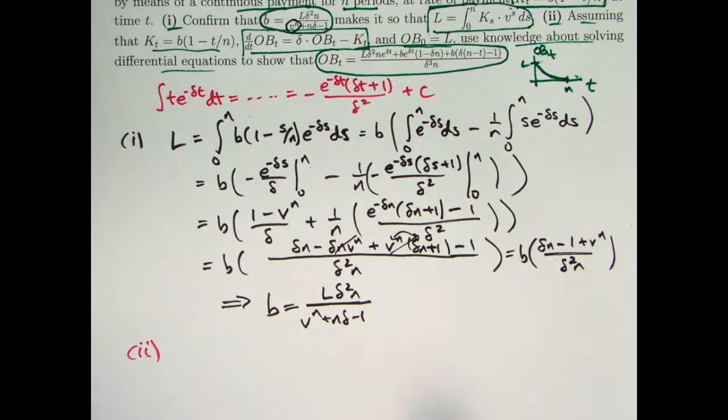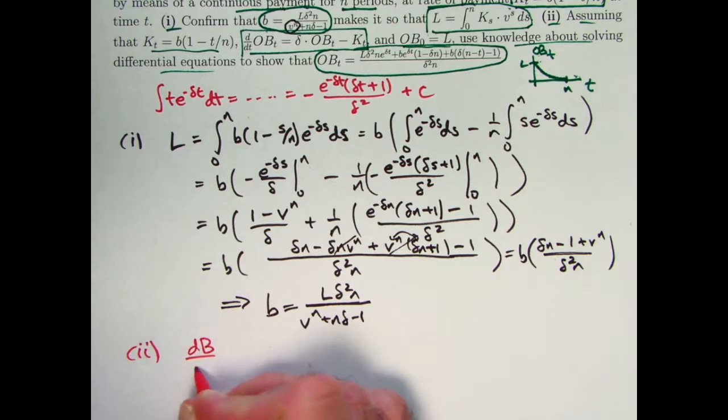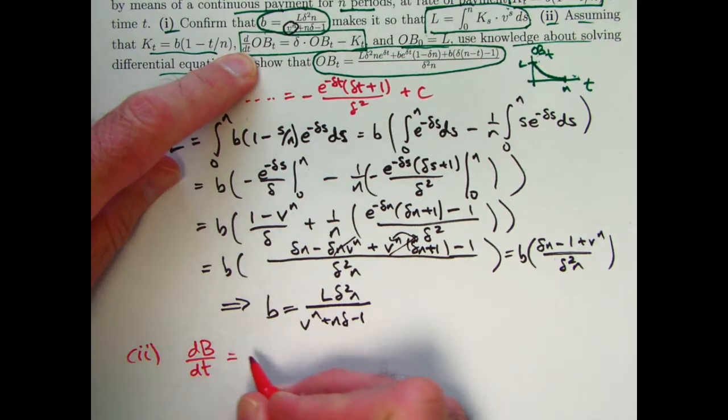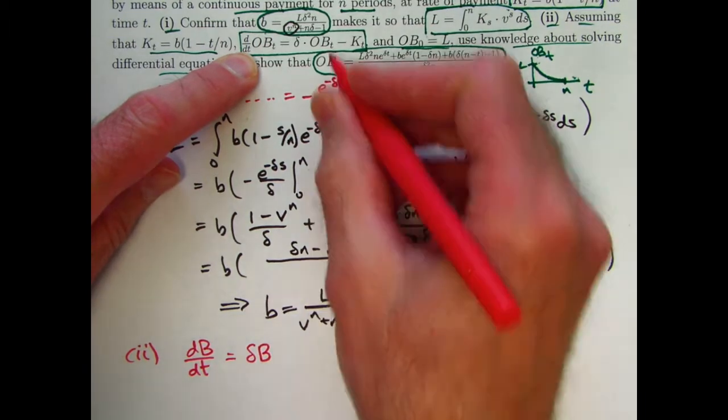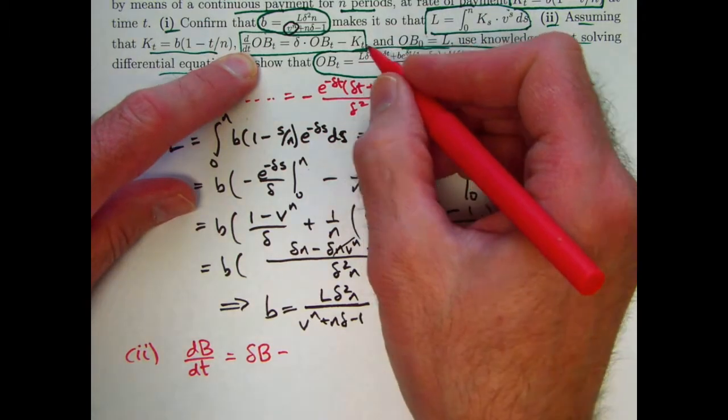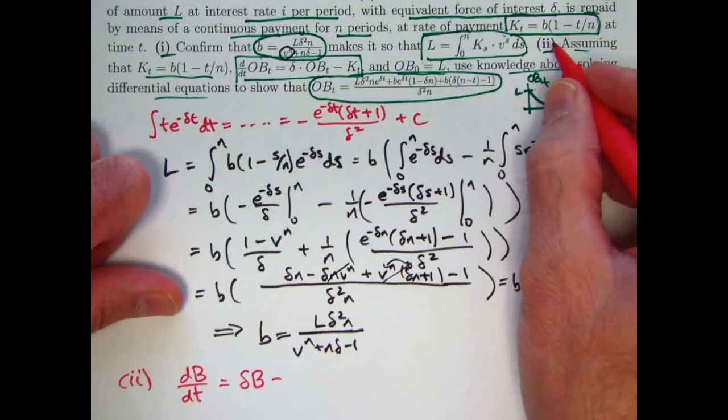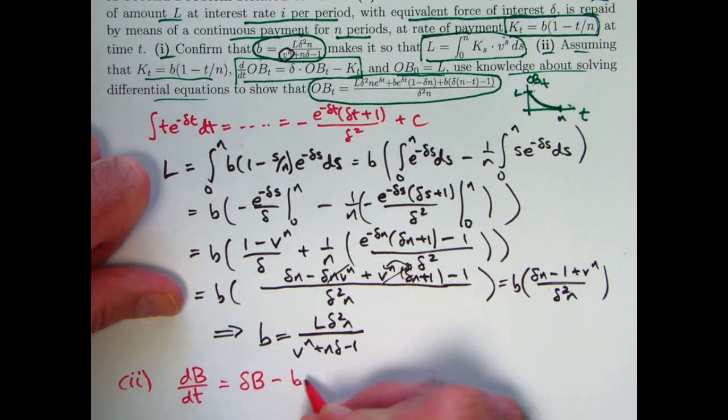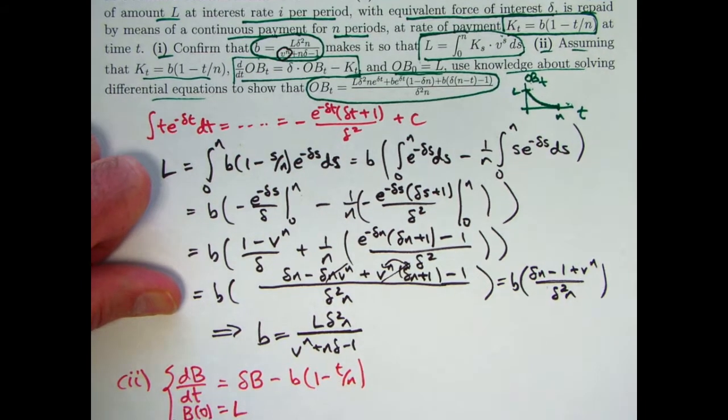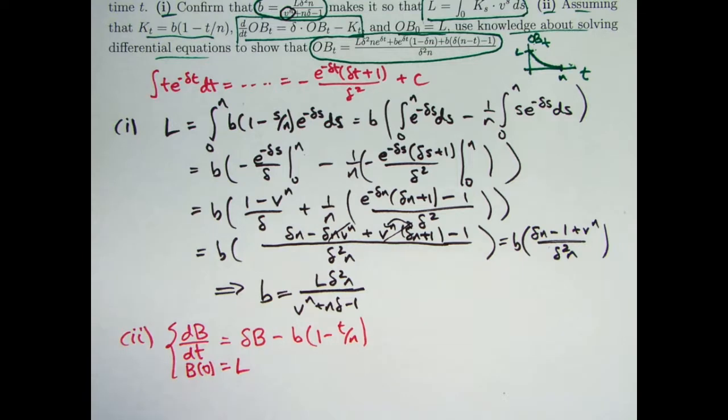All right, now we're on to part two, the differential equation. Once again, let me just let B be the same as OB to simplify things. I'm looking at this differential equation here with a B instead of an OB. And it's traditional to not put a B_t or B of t here when you write the differential equation. Minus K_t. K_t is this thing. So minus b times 1 minus t over n in parentheses. That is your differential equation. And your initial condition, once again, is B of 0 equals L. So there's the initial value problem to solve.